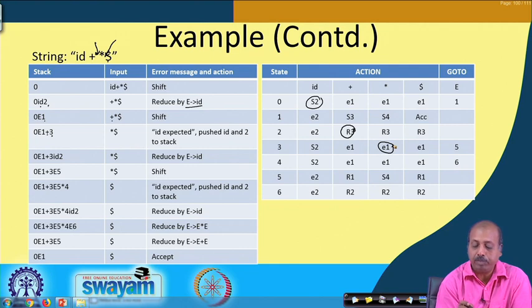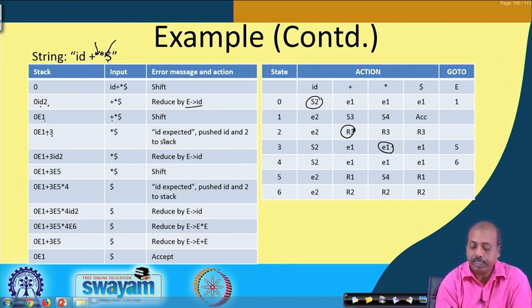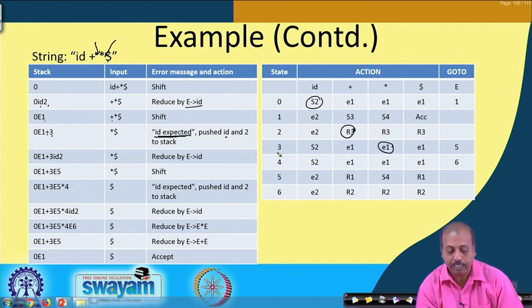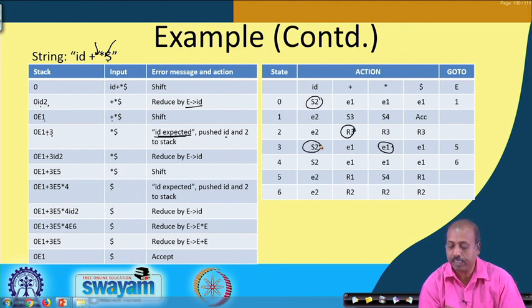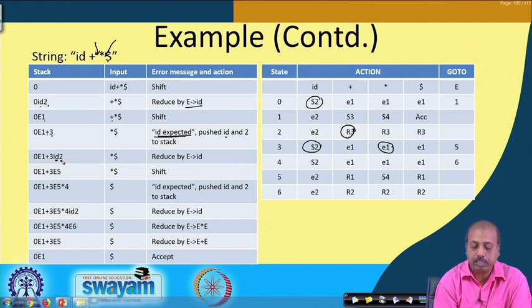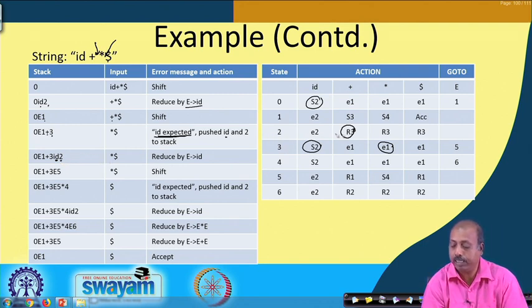It will assume that the input it has seen is id. So it will flash the message 'id expected' and then push an identifier id and state 2. If it gets an id the action is shift 2, so it pushes id and new state 2 into the stack. Now with state 2 and star, it says reduce by rule number 3.